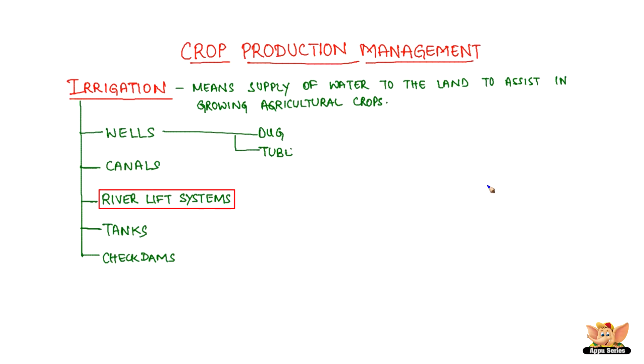This is possible in areas that are close to rivers. Tanks are small storage reservoirs which intercept and store the runoff of smaller catchment areas. Checked dams are also built for irrigation purposes, which stop the rainwater from flowing away.